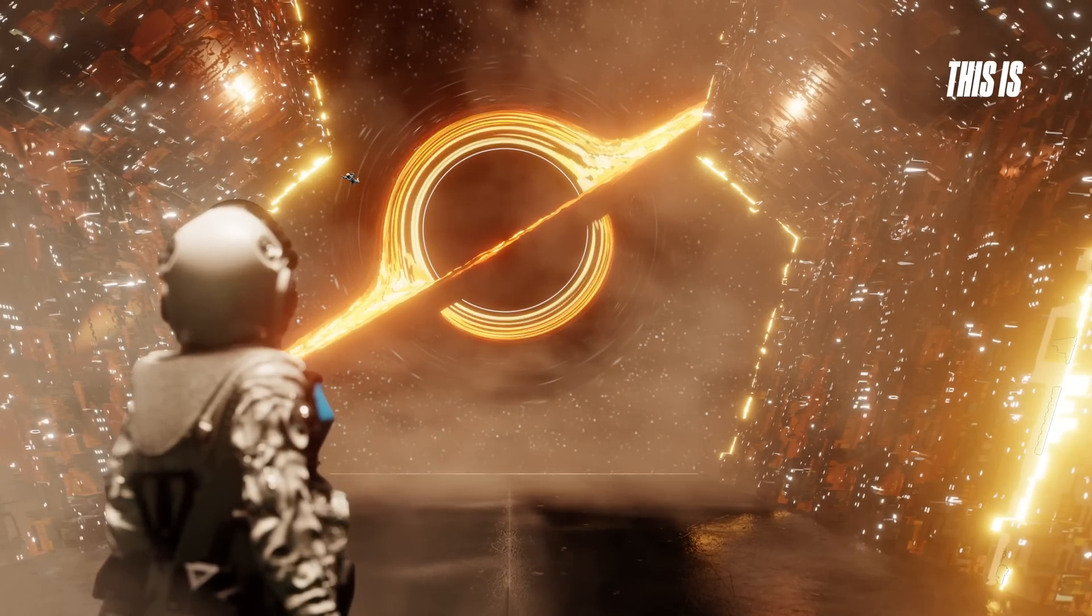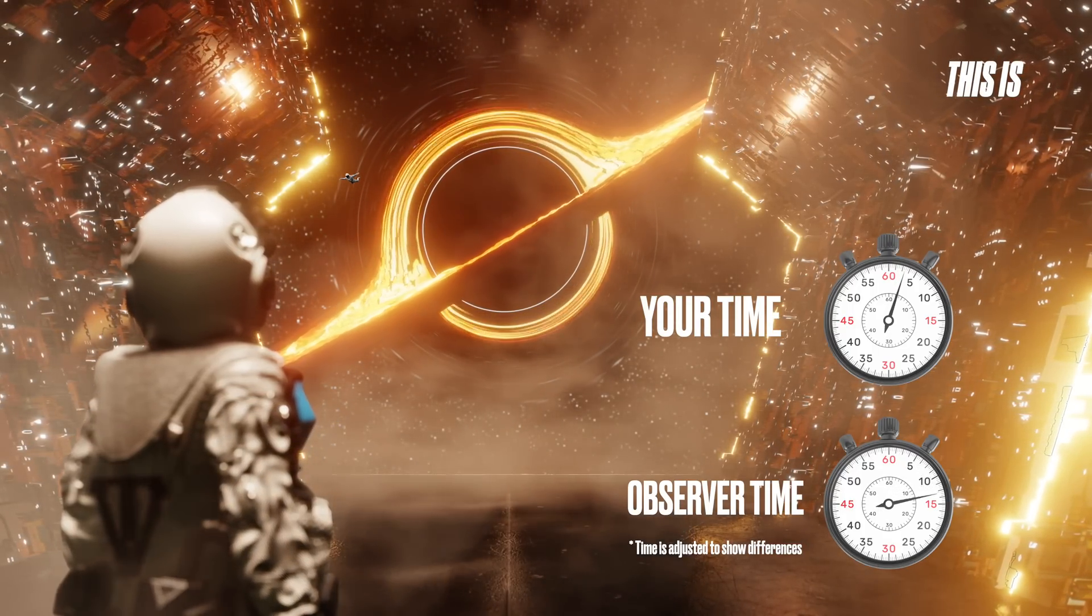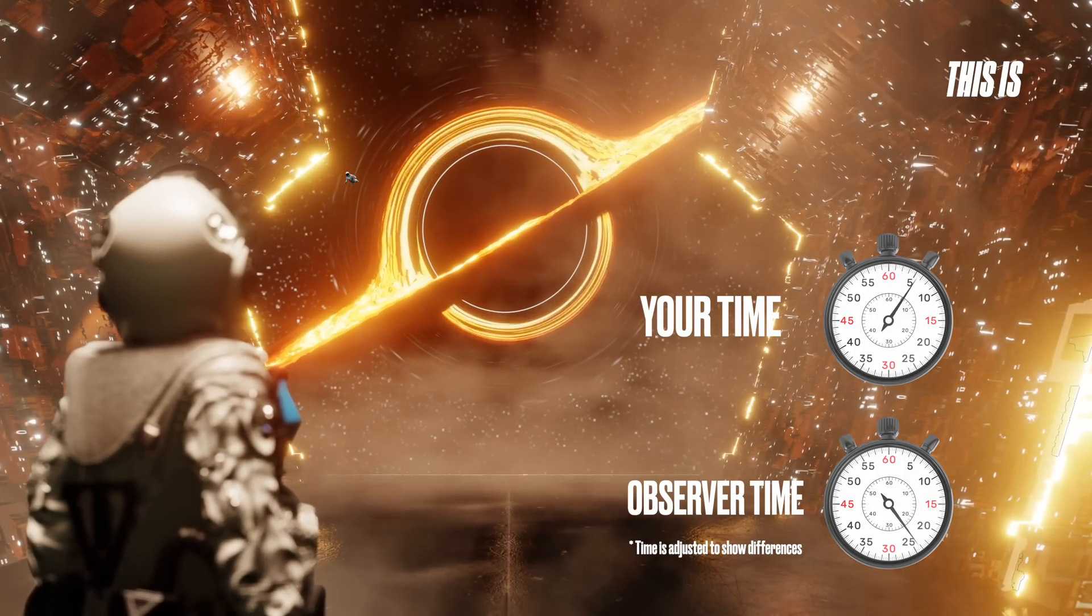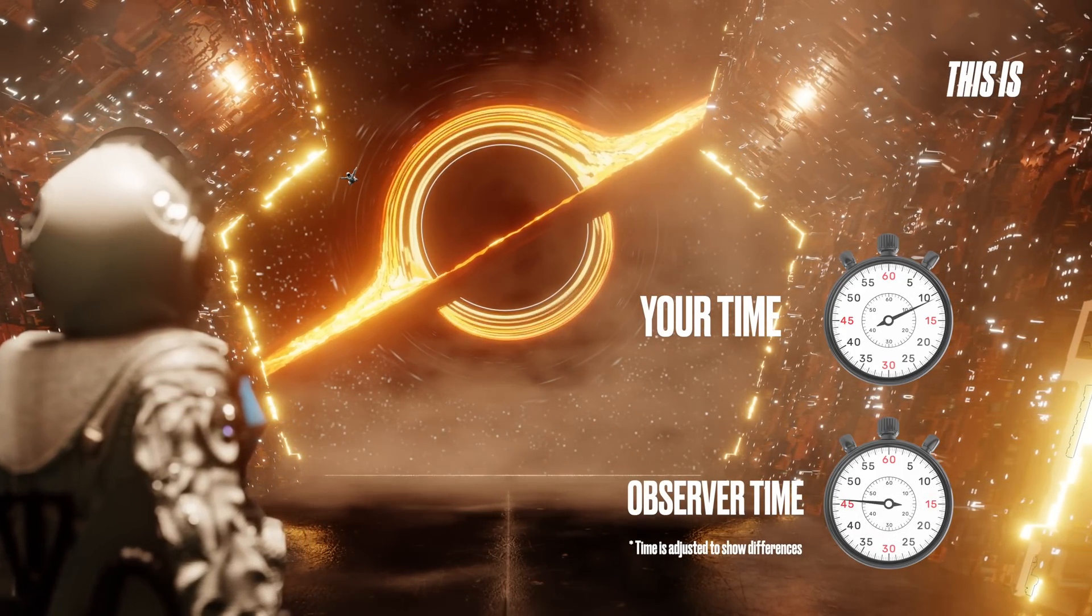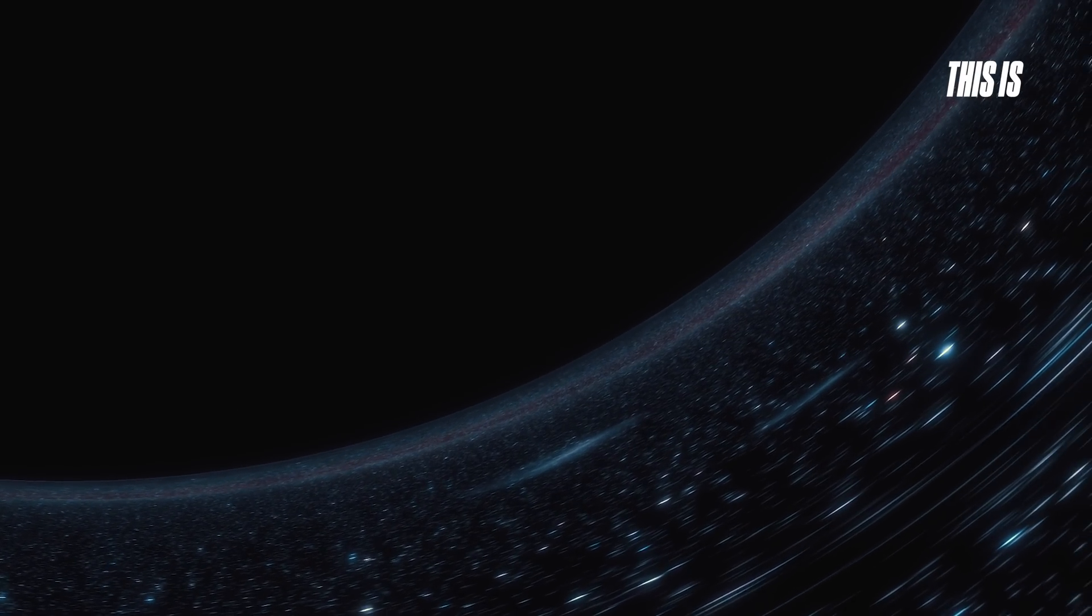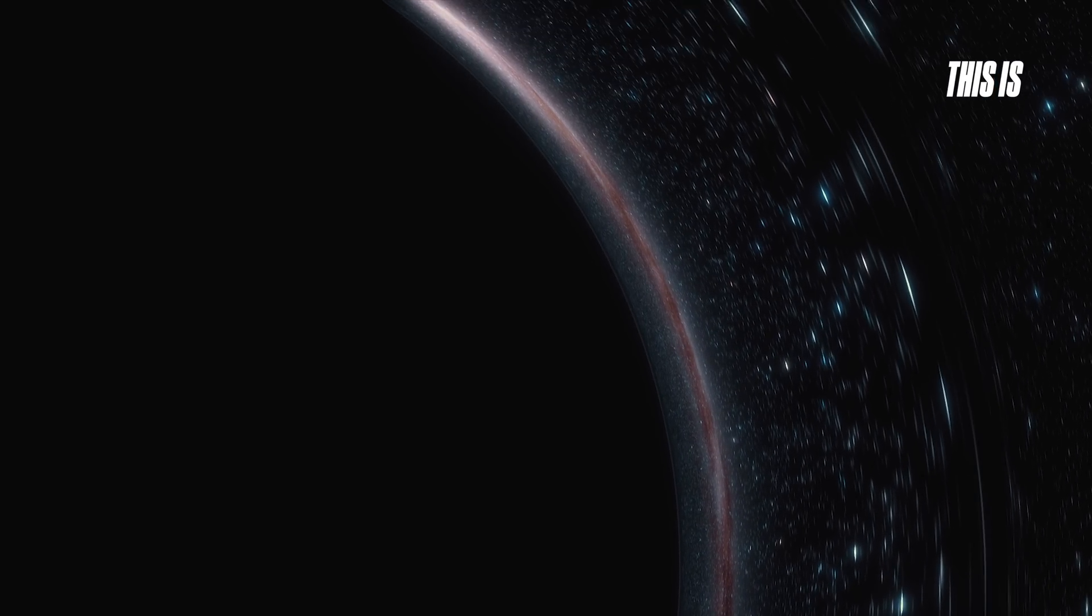If you approach the event horizon, time itself starts behaving strangely. To you, everything would feel normal, but an observer watching from a safe distance would see you slow down. This is due to extreme space-time curvature. Gravity slows the flow of time. The closer you get to the black hole, the stronger the effect.